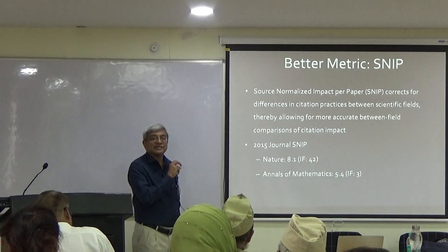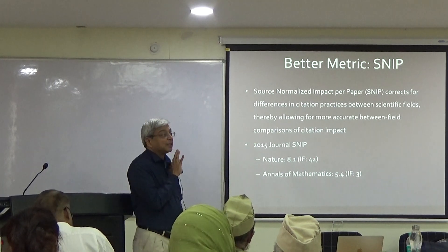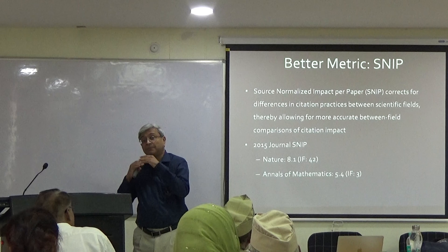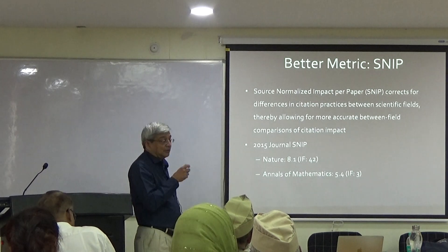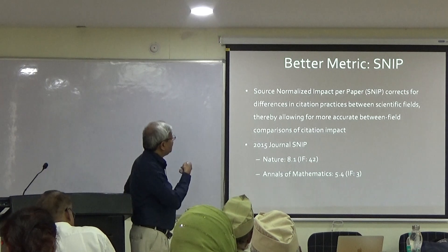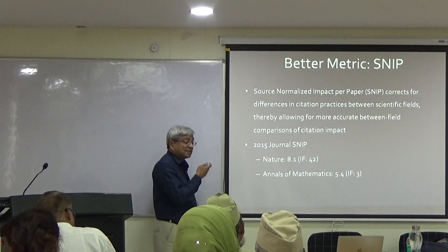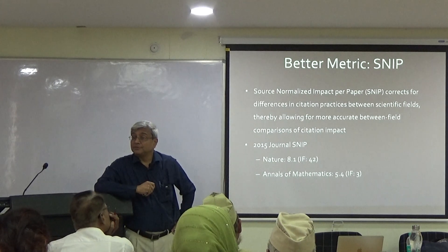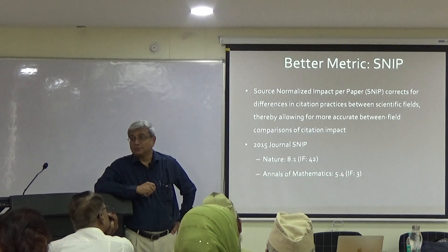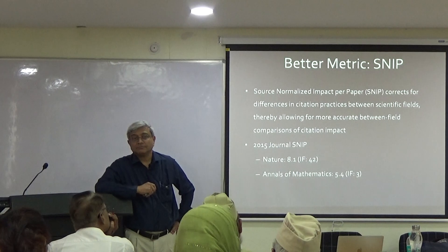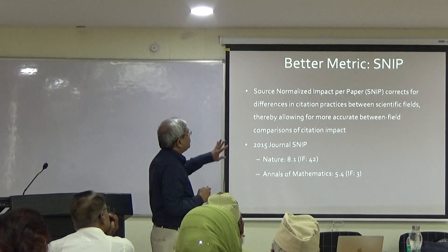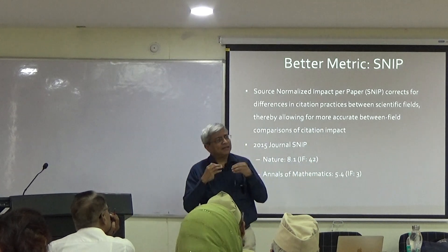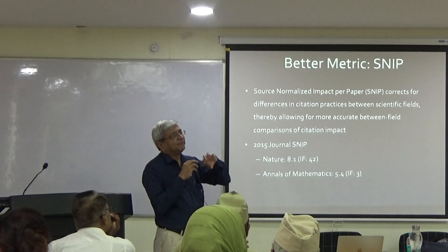Now you see that they are roughly comparable. They are still not really comparable, but they are roughly comparable. This normalization, in some sense, normalizes for every field and brings them all up to a relatively equal level. That is why, if you have to use impact factor, it is better to use this normalization. You use the multiplication of the SNIP and the impact factor. It basically corrects for every area — some areas have a lot of citations, some areas have less.